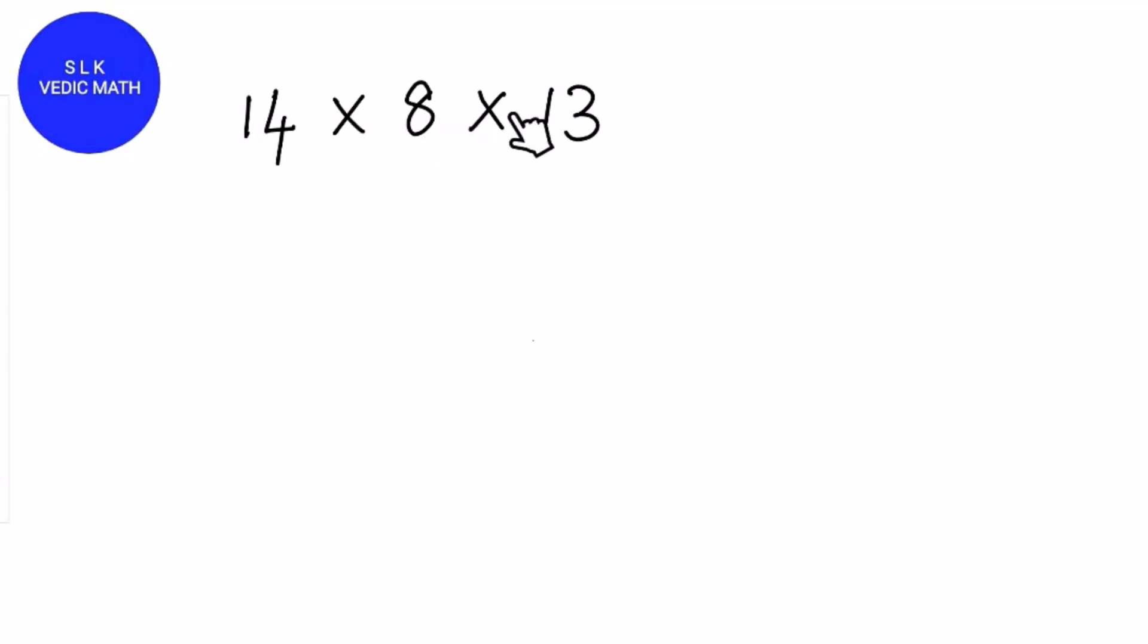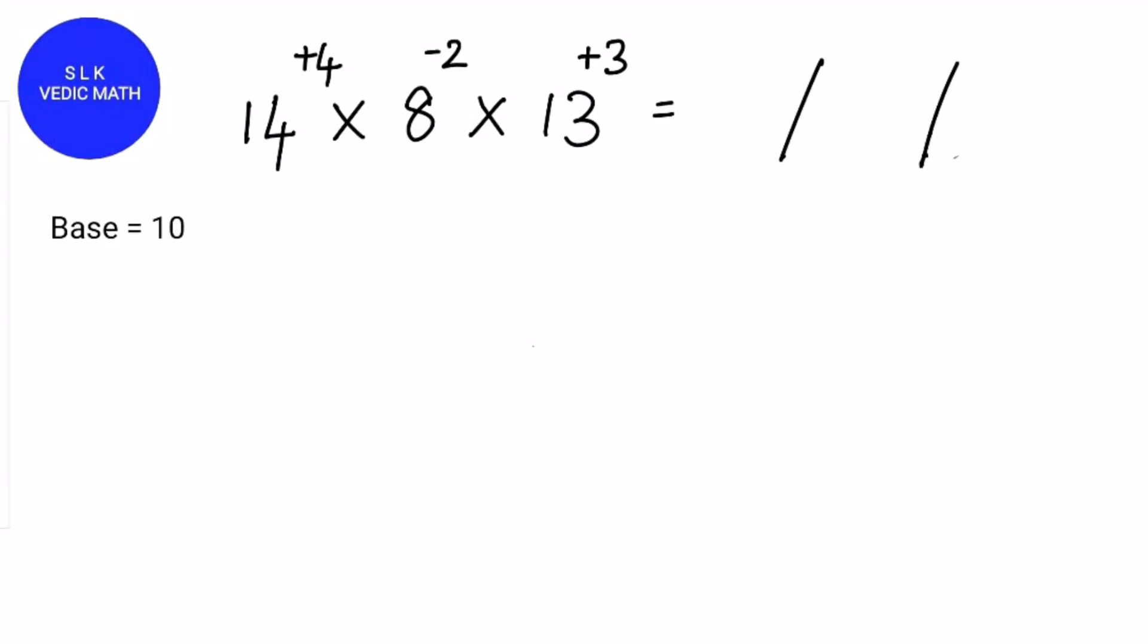14 × 8 × 13. The base for 14, 8 and 13 is 10. 14 is 4 more than 10, so write plus 4. And 8 is 2 less than 10. And 13 is 3 more than 10, so write plus 3. Now put 2 strokes to divide it into 3 parts.